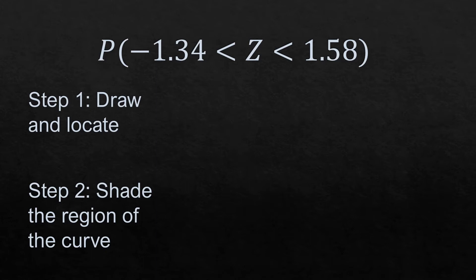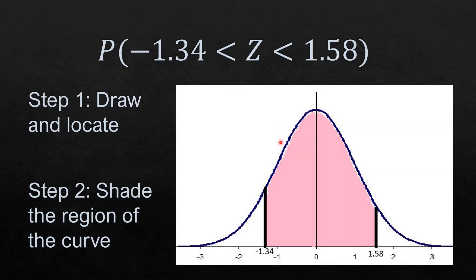Here we have the probability that Z is greater than negative 1.34 but less than 1.58. The first thing that we need to do is to draw and locate negative 1.34 and 1.58. Negative 1.34 is between negative 1 and negative 2, while 1.58 is between 1 and 2.